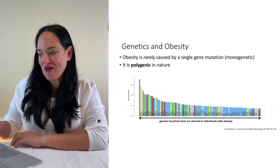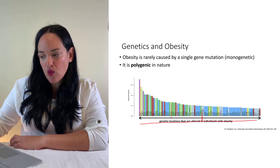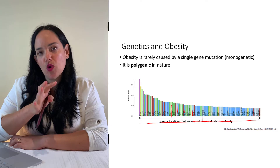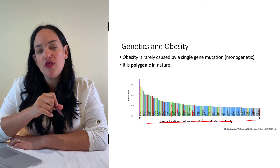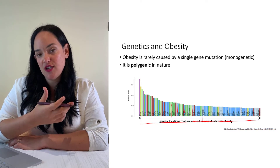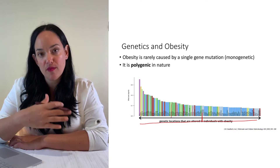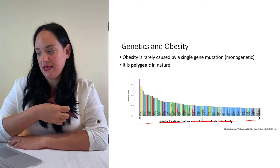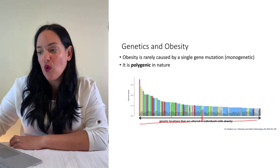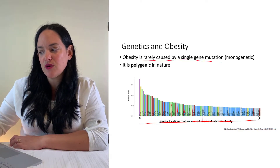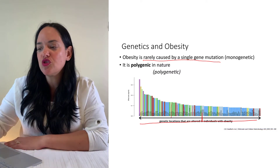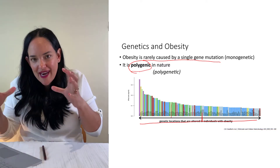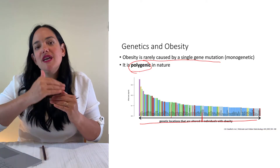Each of the little bars on this slide represents one genetic location where a mutation is more likely to exist in individuals with obesity. There are about a hundred genetic changes — single nucleotide polymorphisms — more likely in individuals with obesity. Obesity is rarely caused by a single gene mutation; it's usually polygenic, meaning a bunch of different changes in our genes add together to lead to an increased risk of obesity.